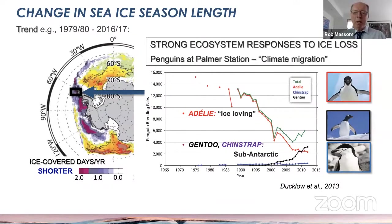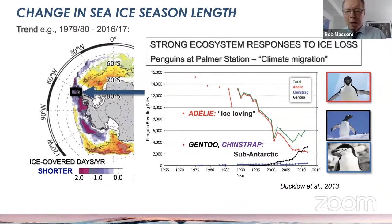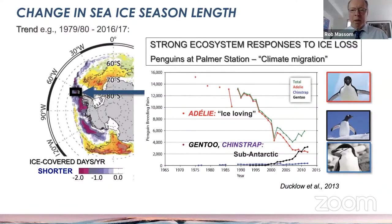For instance, a long-term ecological research study at Palmer Station has shown climate migration in the penguins living there. Around 1990, the population was dominated by Adélie penguins — virtually the only species living there. But due to loss of sea ice over subsequent decades, the Adélie population plummeted significantly. Chinstrap and gentoo penguins came in — these are sub-Antarctic species rather than ice-loving species. Now the gentoo penguin makes up about half the population at Palmer Station.